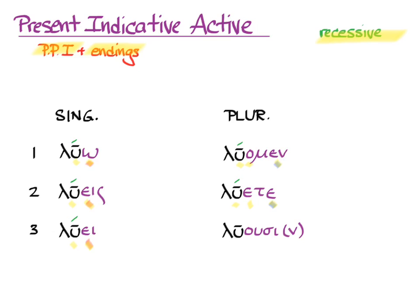And finally, with the third person plural, that iota at the end is short. So we count one, two, three, and we put in an acute over the last syllable. That's the whole conjugation.